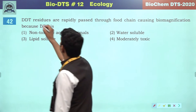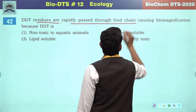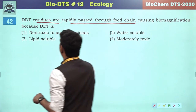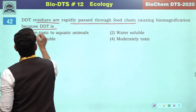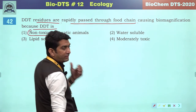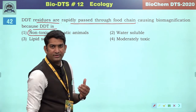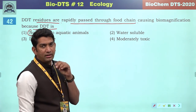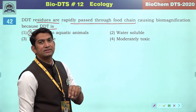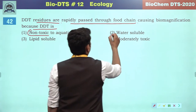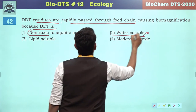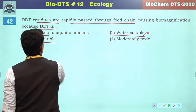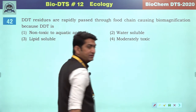DDT residues are rapidly passed through the food chain causing biomagnification. DDT cannot be considered non-toxic — for aquatic animals it is definitely toxic. Organisms of higher trophic levels are affected adversely more and more. DDT is not water soluble — it is lipid soluble or fat soluble. So the third will be the correct answer.